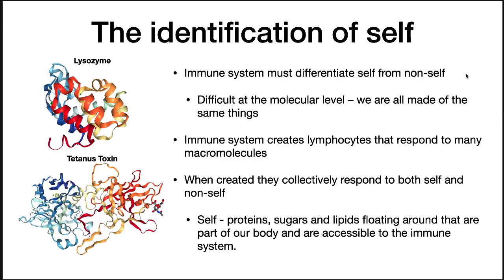One of the major things the immune system must be able to do is identify self. The immune system must differentiate self from non-self. You might think it's obvious to tell the difference between a pathogen and a human, but this is actually difficult at the molecular level — we're all made of the same things. The immune system has to tell the difference between something you make and something dangerous. For example, lysozyme is something you make, so you wouldn't want to protect yourself against it, but tetanus toxin is something you'd definitely want protection from.